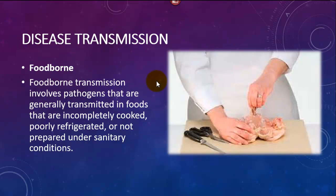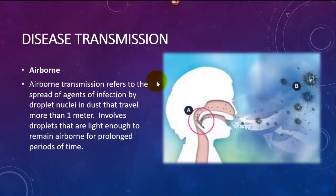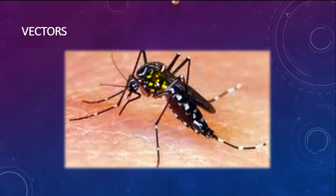Foodborne transmission is from eating food that is not cooked or refrigerated properly. You can eat raw fish, but meat left out for long periods undergoes what is called temperature abuse. Undercooked pork and chicken can cause salmonellosis. Airborne transmission is different from droplet — droplet is sneezing and coughing, while airborne means just being in the room with somebody. Microbes can attach to dirt particles in the air, and viruses can actually float in air. Vectors are arthropods that transmit disease.